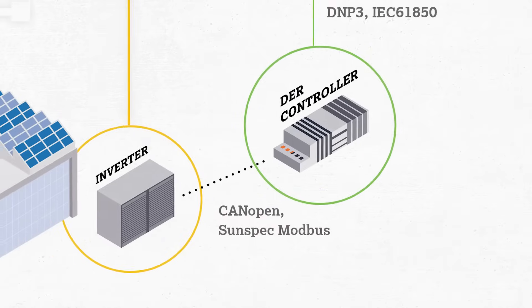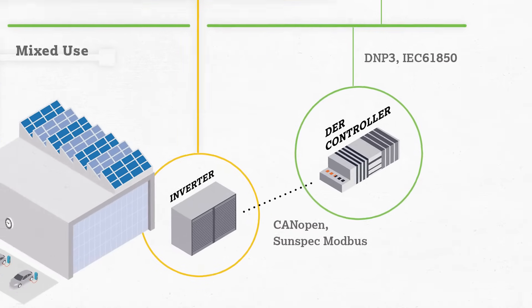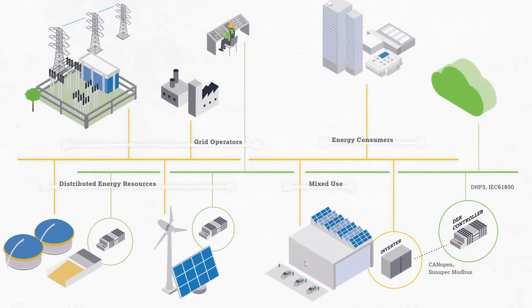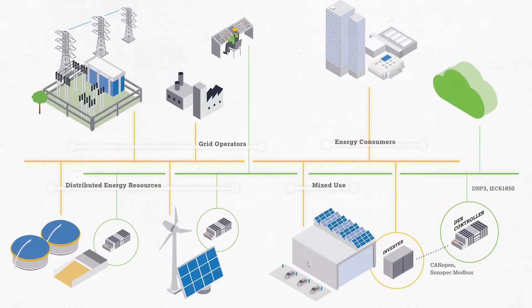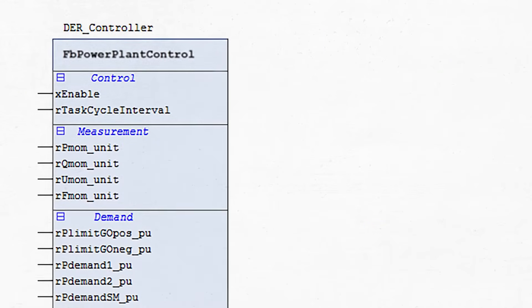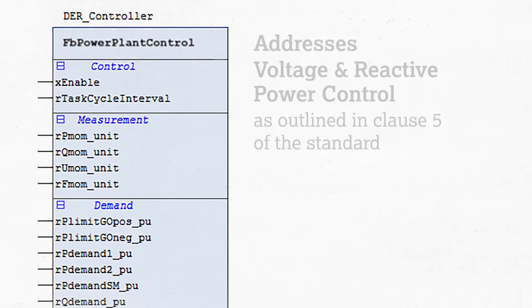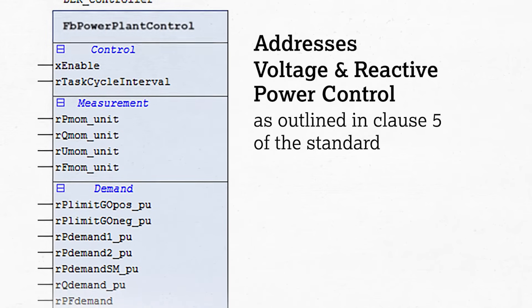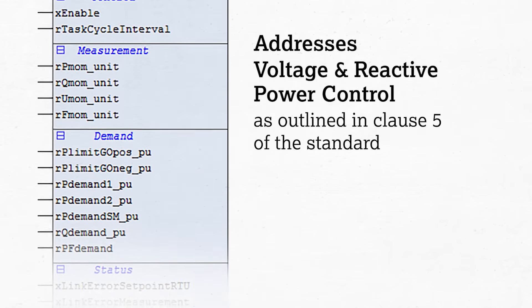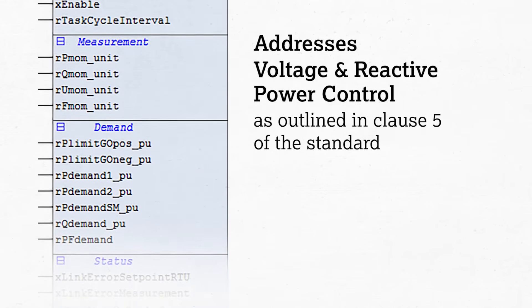The 1547 standard is used to define this interface. For a DER plant to be allowed to connect to the grid, it must comply with the 1547 specification in many states. The WAGO DER controller addresses voltage and reactive power control as outlined in Clause 5 of the standard.